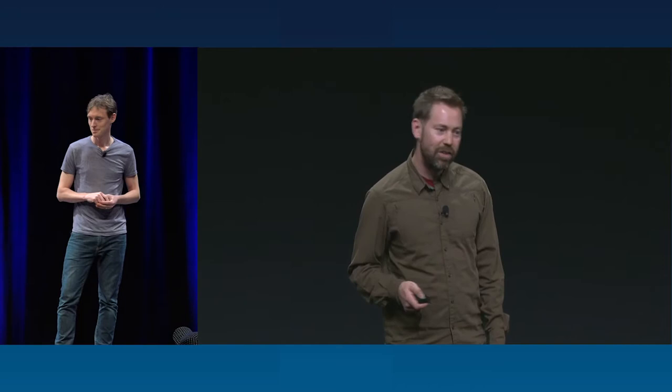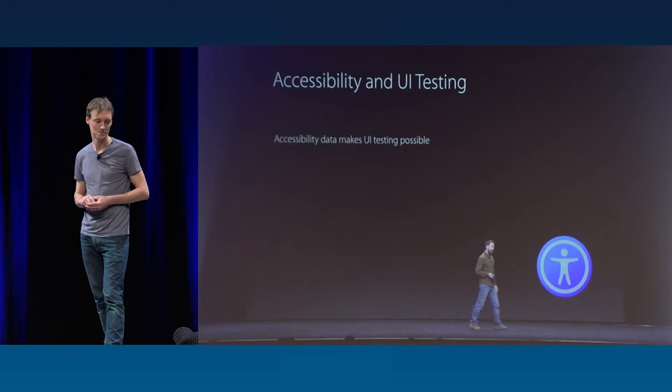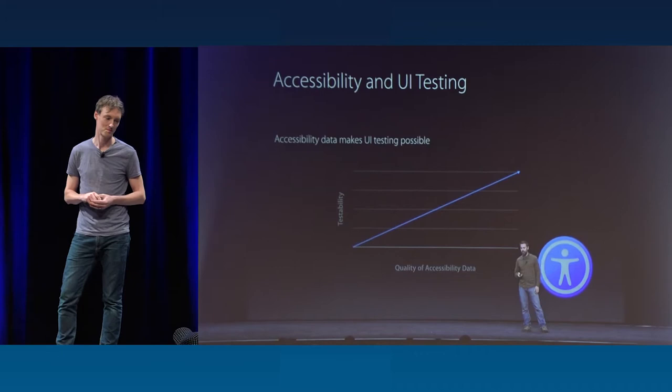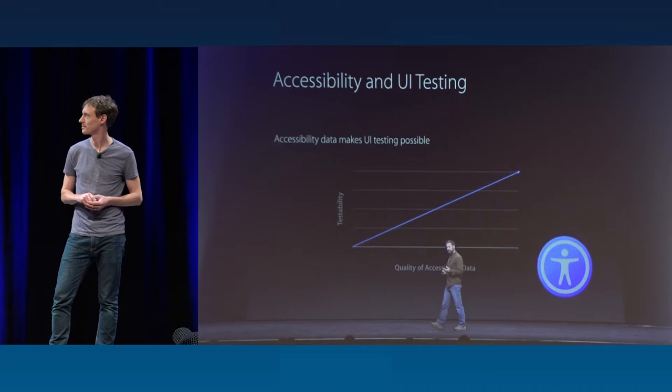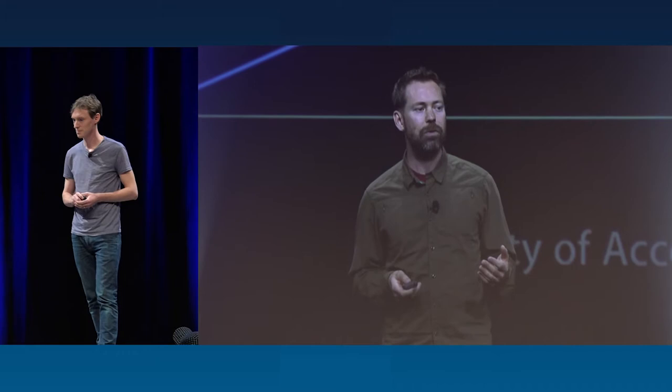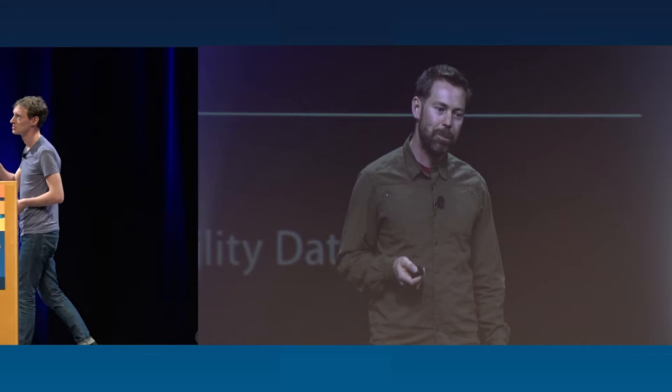From the WWDC clip: accessibility data is what makes UI testing possible. The quality of the accessibility data really impacts your testing — the better the accessibility data for your application, the easier it is to write tests and the more reliable those tests are over time. So you get a double benefit when you improve the accessibility in your application: you've not only made it easier for your own testing, but you've improved the experience for all disabled users.